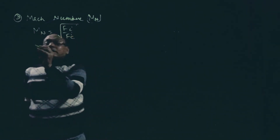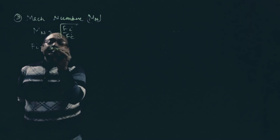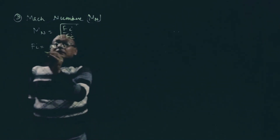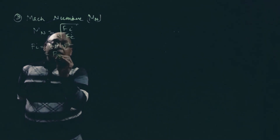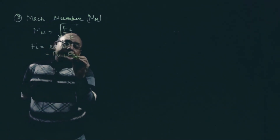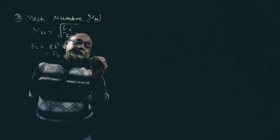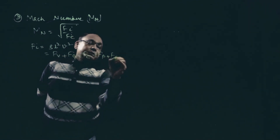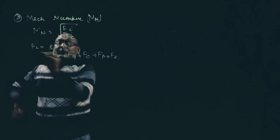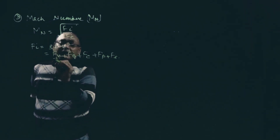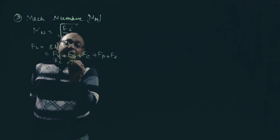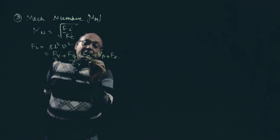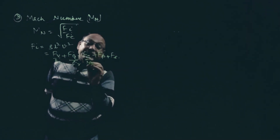We know Fi is nothing but rho L squared V squared. Fi can be equated to viscous force, gravity force, compressibility force, pressure force, and surface tension force. Fi by Fv gives Reynolds number, Fi by Fg gives Froude number, and Fi by Fc gives Mach number.